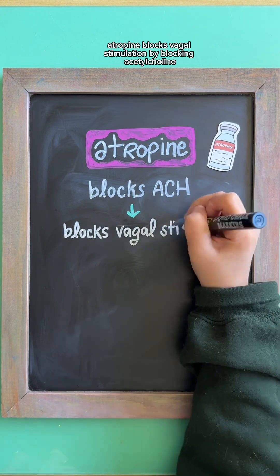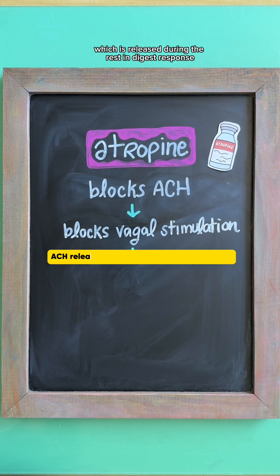Atropine blocks vagal stimulation by blocking acetylcholine, which is released during the rest and digest response.